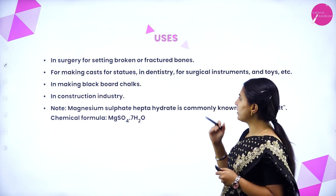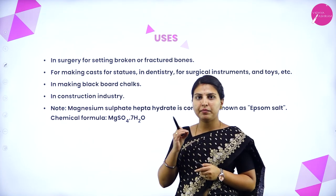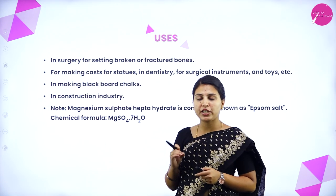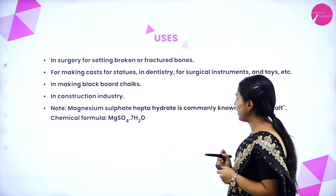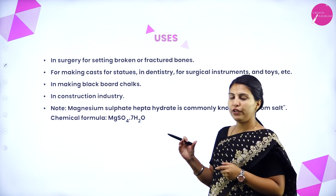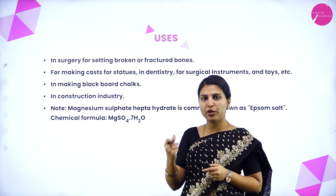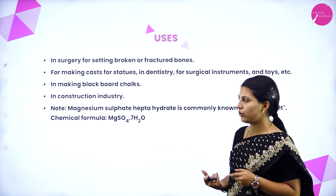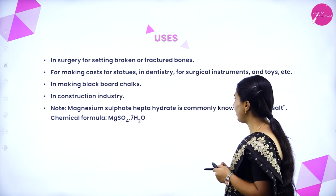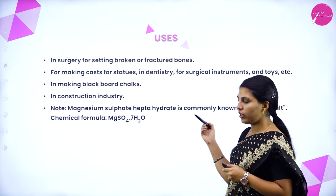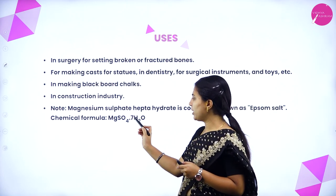Uses of plaster of Paris: in surgery for setting broken or fractured bones; for making casts for statues; in dentistry; for surgical instruments and toys; in making blackboard chalks; and in the construction industry. Note: magnesium sulphate heptahydrate — MgSO₄·7H₂O — is commonly known as Epsom salt, analogous to gypsum for calcium.